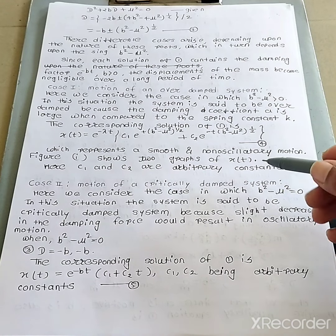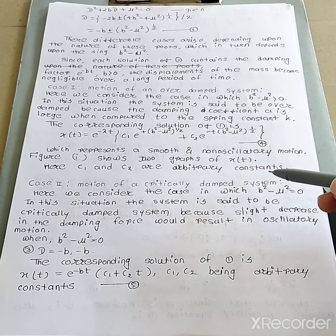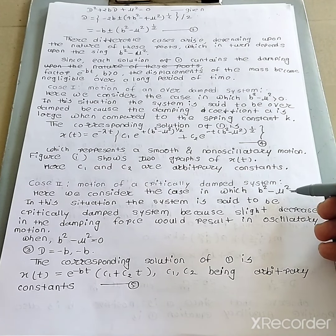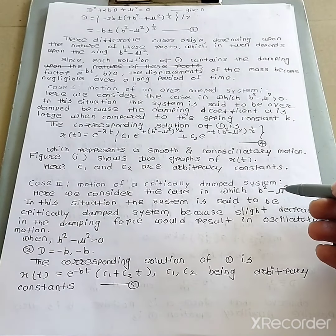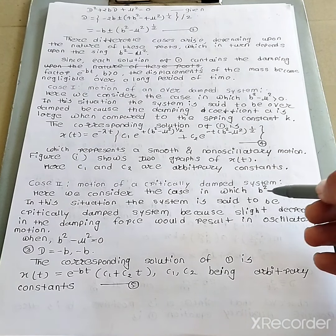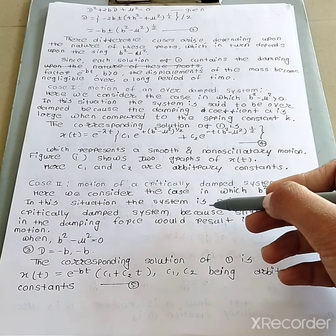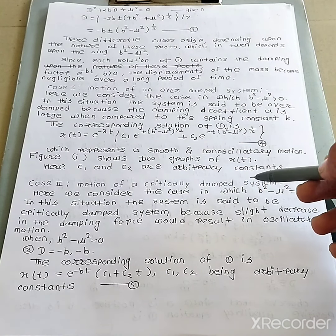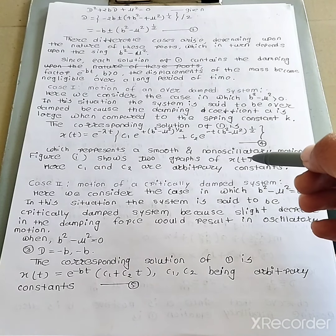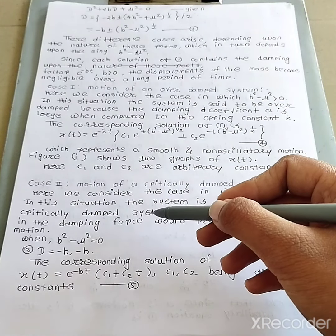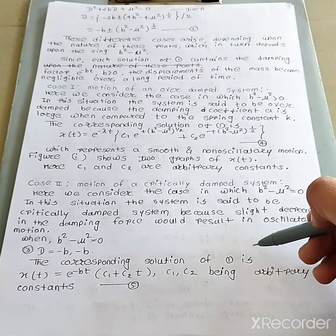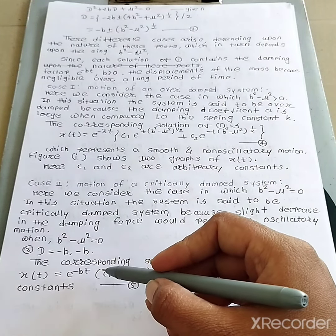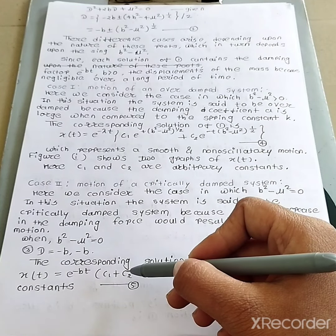Case 2: Motion of the critically damped system. We consider the case in which b² minus μ² equals 0. In this situation the system is said to be critically damped, because the slight decrease in the damping force results in a different behavior. Here b² minus μ² equals 0, so both roots are D equals minus b. The corresponding solution of equation 1 is: x(t) equals e raised to power minus bt times (c₁ plus c₂t).